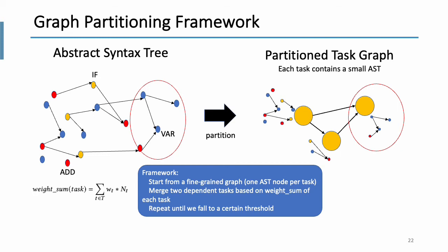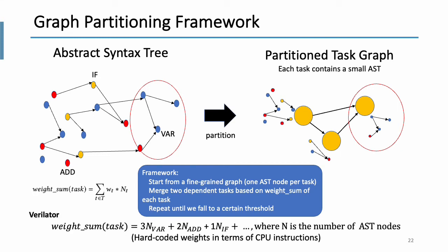In Verilator, they use hard-coded weight in terms of CPU instructions. So for example, they think the variable node, the weight of variable node is 3. And for example, the weight of add node is 2, and so on and so forth. So in Verilator, they use hard-coded weight in terms of CPU instructions. And as you can imagine, this CPU-specific partitioning cannot provide good performance for GPUs, because the architecture of CPU and GPU are totally different.